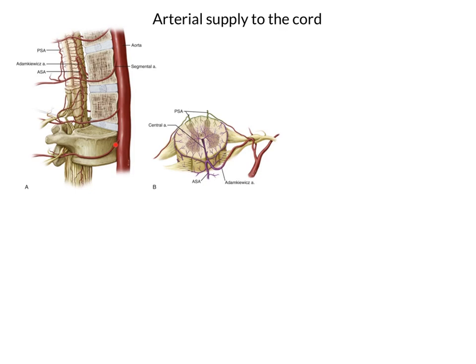However, as you should remember, right at the top of the cord, the anterior spinal artery also arises as the confluence of two branches from the vertebrals. So we've got contributions from the vertebrals and the segmental arteries feeding into the spinal cord blood supply.